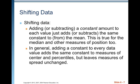Let's talk about why this works with shifting data. Adding or subtracting a constant amount to each value just adds or subtracts that same constant to or from the mean. This is true for the median and other measures of position too. In general, adding a constant to every data value adds the same constant to measures of center and percentiles but leaves measures of spread unchanged.